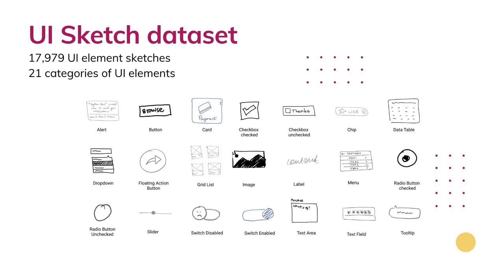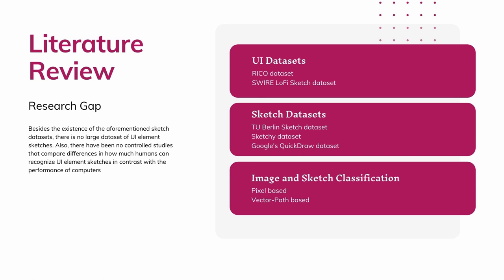Recent research where HCI and AI interact requires large-scale datasets to train AI models. In UI design research, the two large datasets we currently have are RICO and SWIRE. RICO contains around 72,000 UI screenshots, and SWIRE contains about 3,800 low-fidelity screens. SWIRE was sketched by five designers and is specific to a GUI similarity search system, and it does not have annotations for training other supervised learning models.